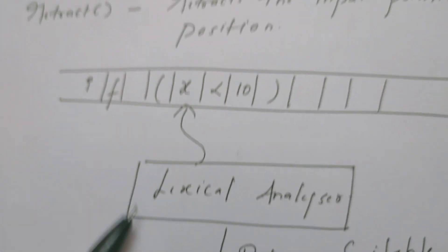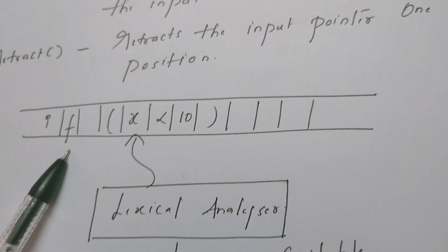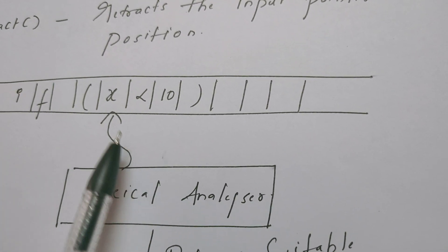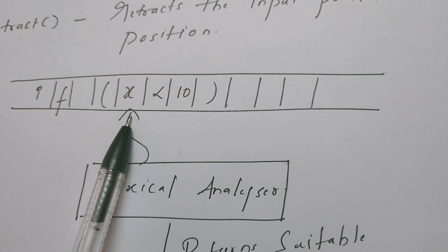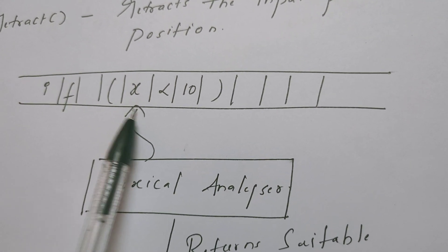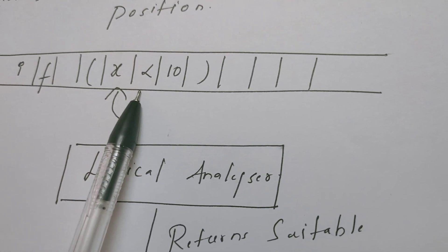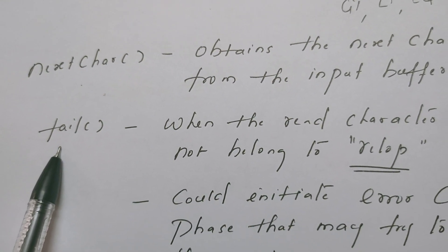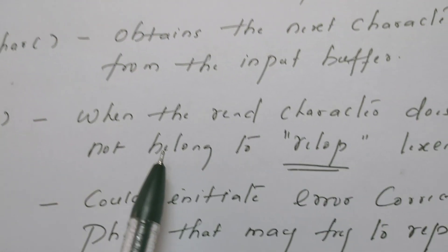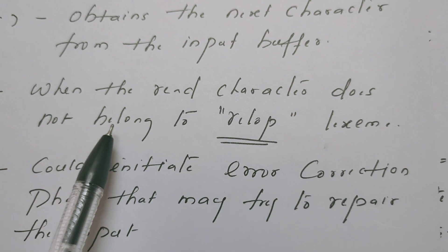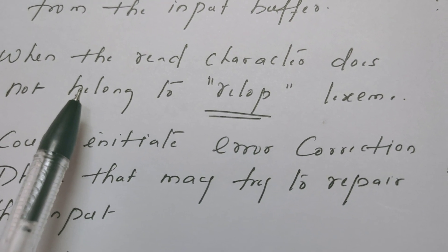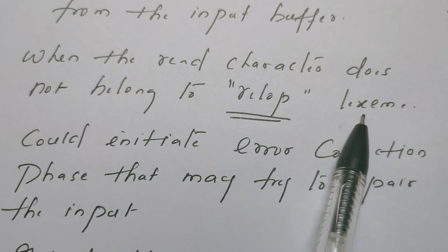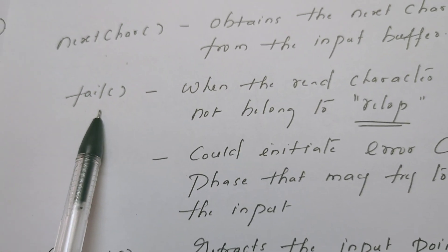The lexical analyzer reads from the input buffer, which is implemented as a two-buffer scheme already discussed. The lexical analyzer reads input character by character. nextCharacter reads the character available next in the input buffer. The fail method is invoked when, while reading the input buffer, the lexical analyzer realizes the characters do not belong to a relational operator lexeme. That is one purpose of the function.